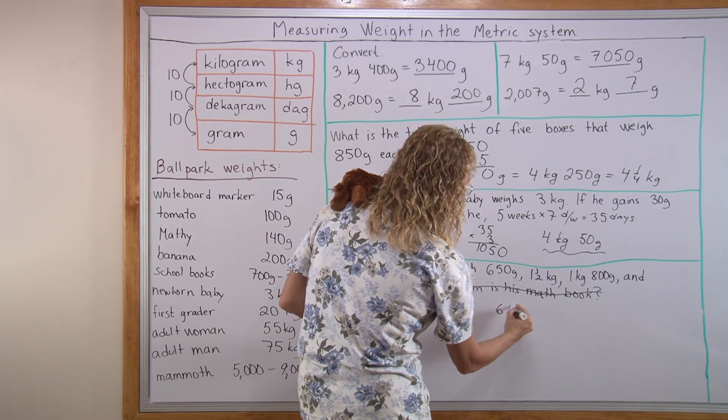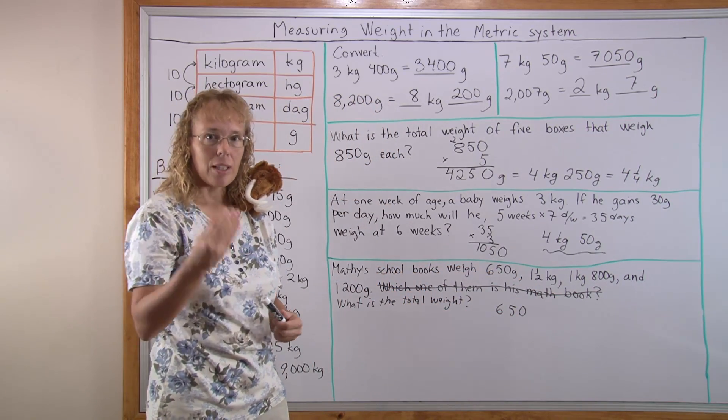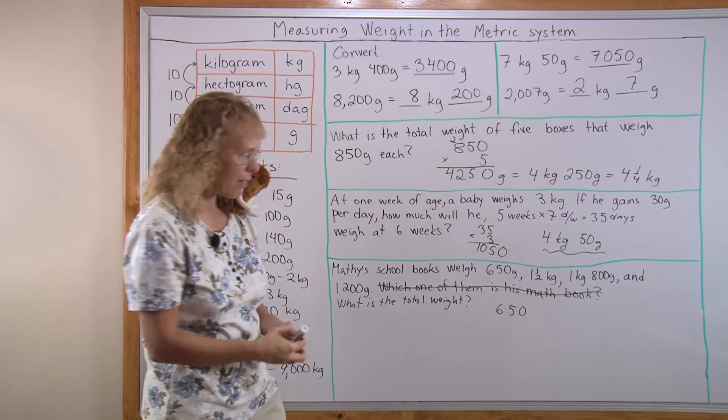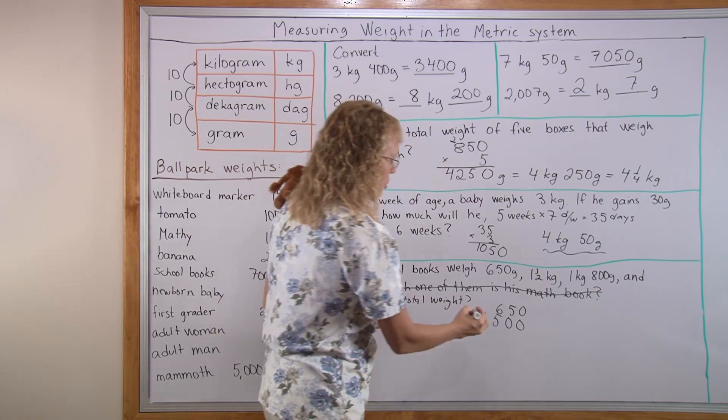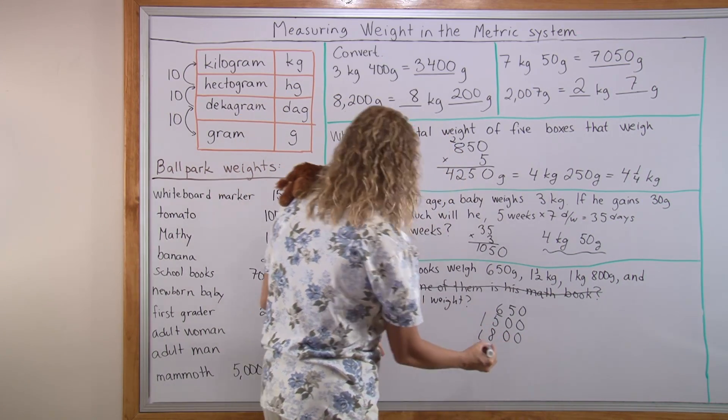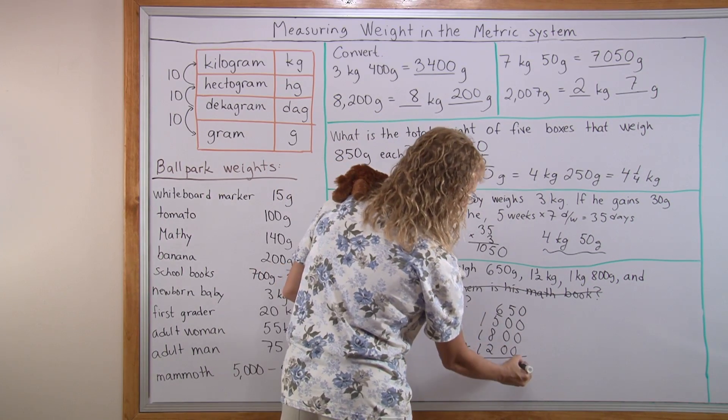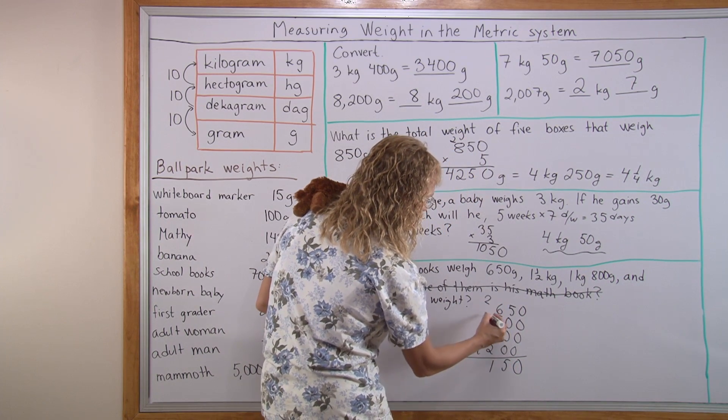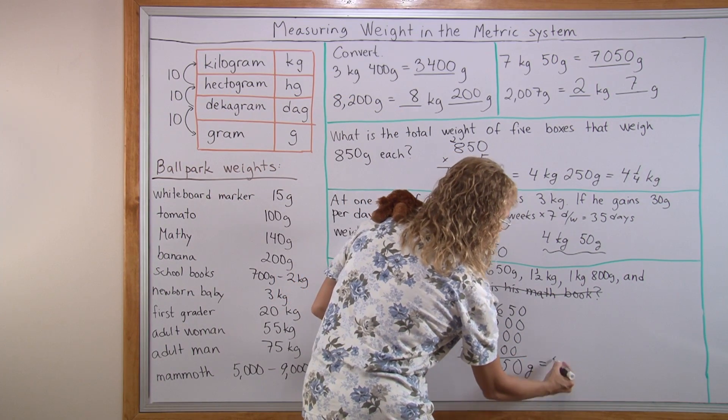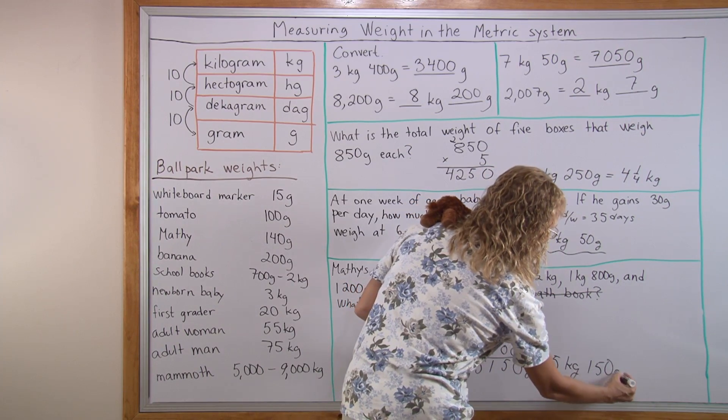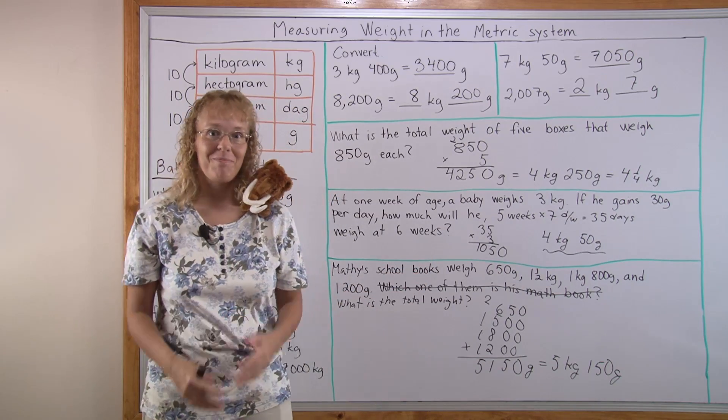We will have 650 grams. Then I'm going to add to it one and a half kilograms. But how many grams is it? One kilogram, thousand grams. Half a kilogram, five hundred, so thousand five hundred. And then one kilogram, eight hundred grams. That would be one thousand eight hundred. And then lastly, thousand two hundred. And now add zero, five, and ten, twenty-one, five, five thousand one hundred and fifty grams. Or five kilograms, one hundred and fifty grams. That's plenty of weight to carry for a fourth grader.